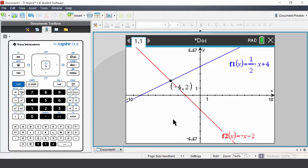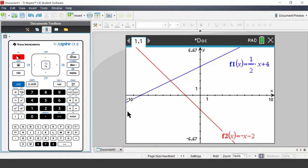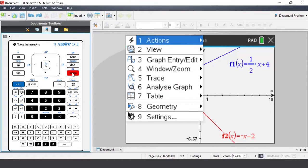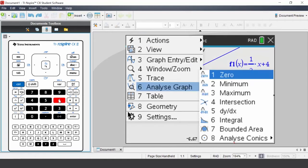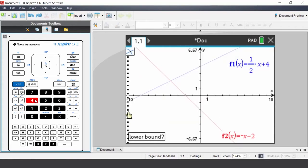To undo, press control escape. Method 2. Press menu, select analyze graph, select intersection. As it looks like X is negative 4, enter a number less than negative 4, negative 5, press enter. Enter a number greater than negative 4, negative 3, and press enter.